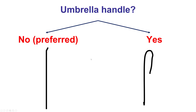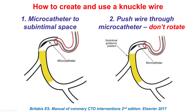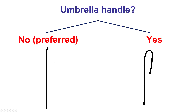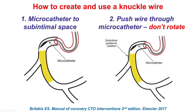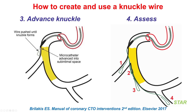One does not necessarily have to create an umbrella before inserting the guide wire into the microcatheter. Quite often, a small 1 mm 30-degree CTO bend is put on the wire, and sometimes the guide wire will actually cross into the distal true lumen. But once there is difficulty, one can create an umbrella handle that facilitates creation of the knuckle within the vessel. Similarly with a CrossBoss, the first step is to advance the microcatheter to the sub-intimal space, then push the guide wire. It is critical not to rotate to avoid fracture of the wire, until the knuckle is formed.